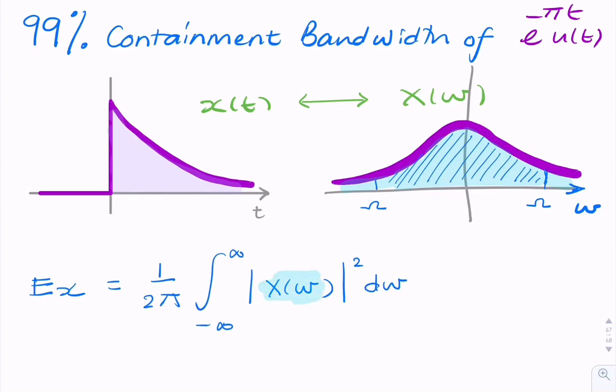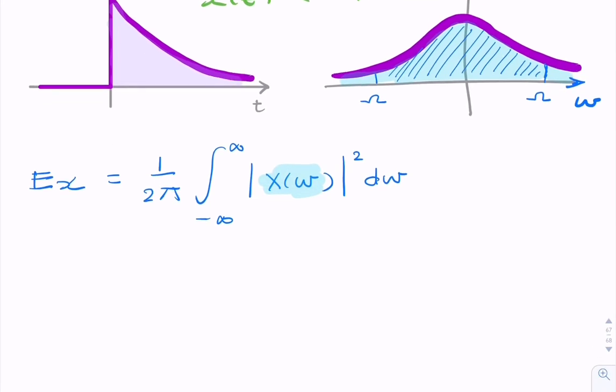That I can replace with 1 over a plus j omega. But we know that the modulus of 1 over a plus j omega squared is 1 over (a squared plus omega squared). We've done that several times before. So using that, we simply put that into the integral.